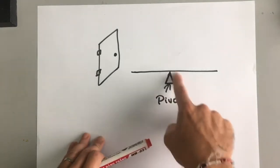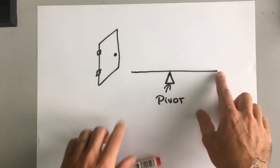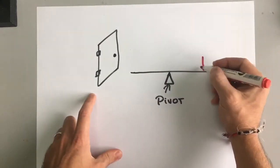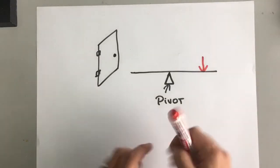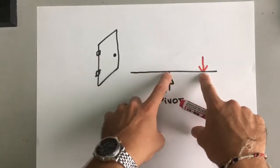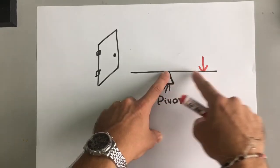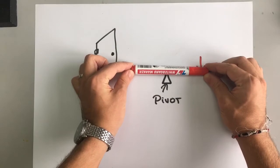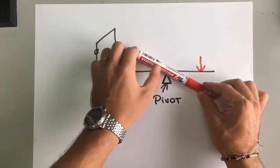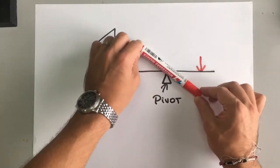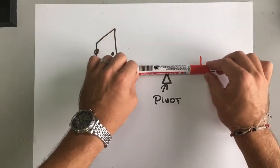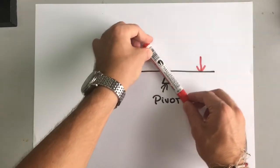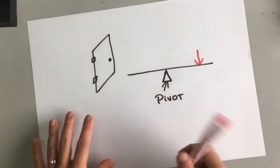Another example of a pivot is a seesaw in a playground. We can have forces, and a force on this bar here will cause it to move around the pivot — the seesaw will tilt. Notice the pivot is not moving. The place attached to the pivot stays in the same place, but the force causes a turning motion, and we call that a turning force.